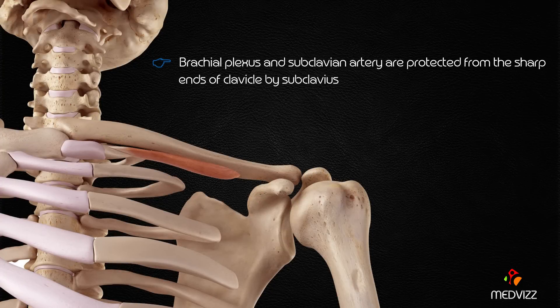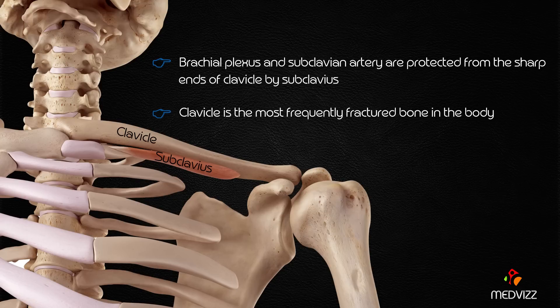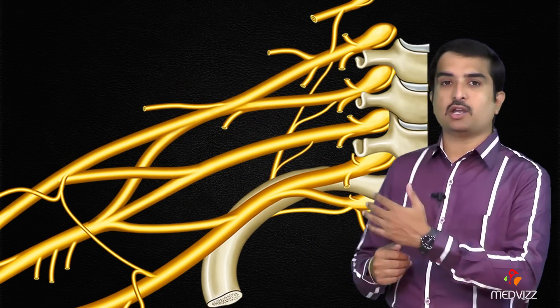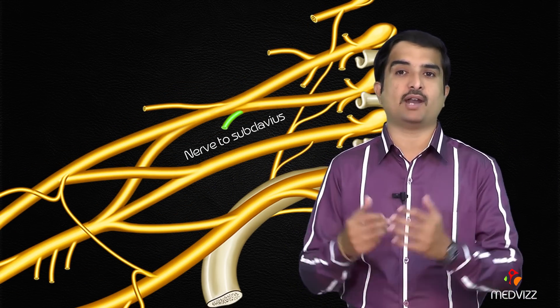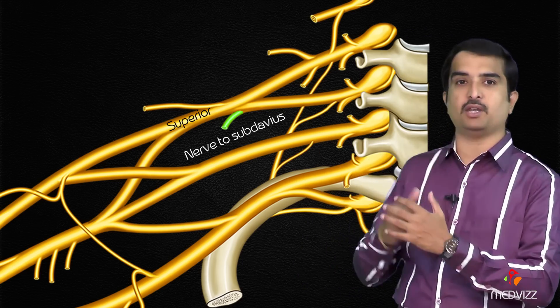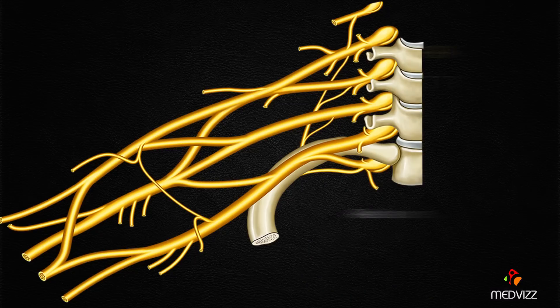The brachial plexus and the subclavian vessels are protected from the sharp ends of the fractured clavicle by the subclavius muscle. The clavicle is one of the most frequently fractured bones in the body. The subclavius muscle is mainly innervated by the nerve to the subclavius, which branches from the superior trunk of the brachial plexus.